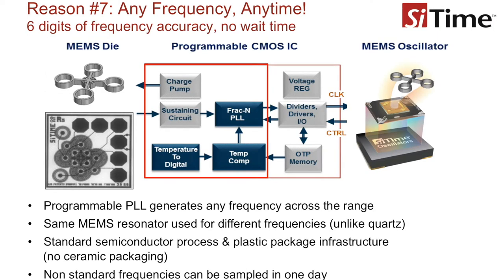Reason number seven: MEMS oscillators are readily available in any frequency. Quartz suppliers are susceptible to longer lead times due to package constraint and the time it takes to cut the crystals. In contrast, the output frequency of MEMS oscillators is generated simply by programming the phase locked loop to different multiplication values, enabling a very wide frequency range with six digits of accuracy. Samples can be available as early as one day, with standard lead time on factory programmed parts being four to six weeks.